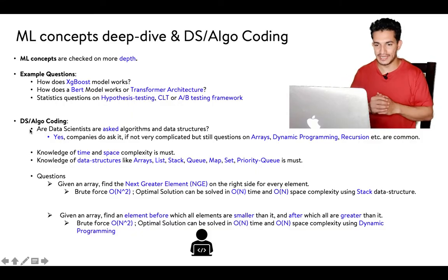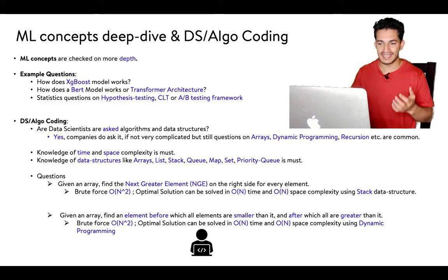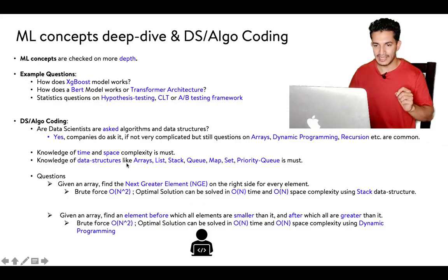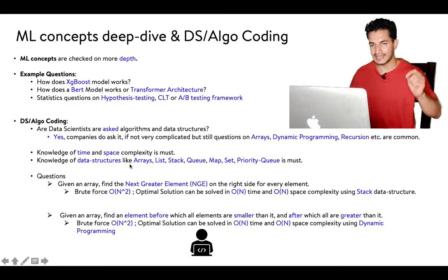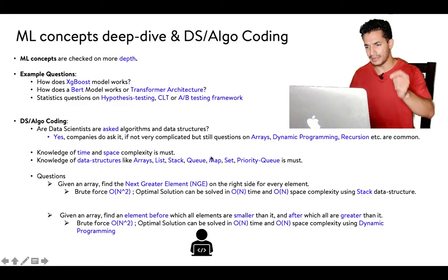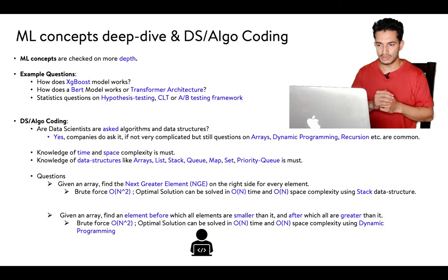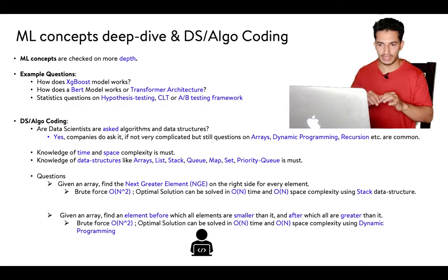A question many data science candidates have is: are data scientists asked algorithms and data structures? Yes, companies are asking these. Not very complicated ones, but questions on arrays, dynamic programming, and recursion are common. Knowledge of time and space complexities is tested, and knowledge of data structures like array, list, stack, queue, map, set, and priority queue is good to have.